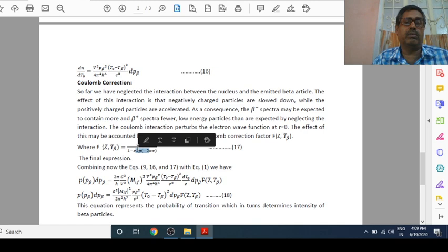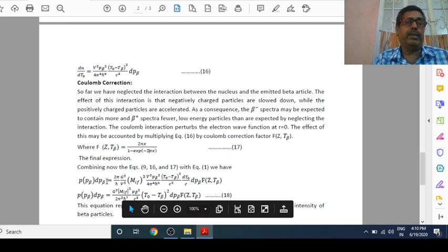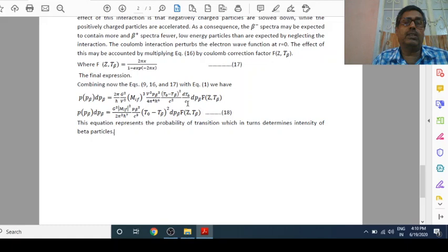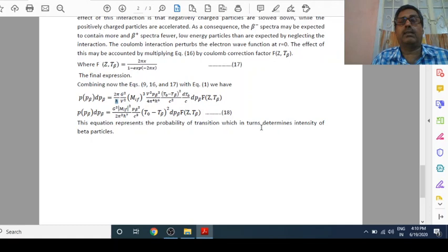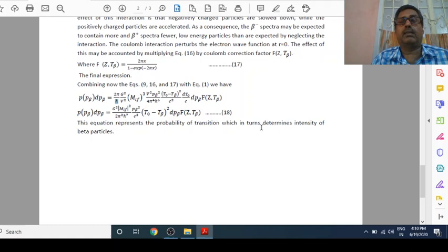When we consider the Coulomb interaction, we take the Coulomb correction factor F(Z,T_β). The final expression will be P(P_β)dP_β equals this expression. You can see here C squared in the denominator, 2π²ħ⁷c³. Here ħ means Planck constant divided by 2π, h/2π. This is the equation which we obtained, and this is the probability of transition which in turn determines intensity of beta particles.